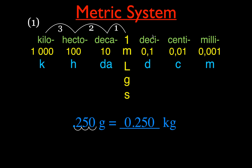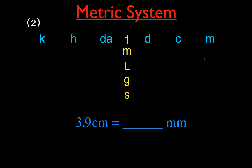When working through these problems, you can just write the chart quickly: a one in the middle, da, h, k going left for ten, hundred, thousand, and d, c, m going right for tenth, hundredth, thousandth. Example 2: convert 3.9 centimeters to millimeters. Centi is one step to the left of milli, so we move one step to the right, shifting the decimal one place right. 3.9 cm becomes 39 mm.